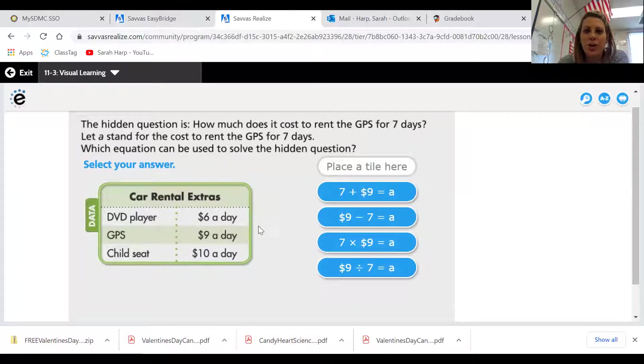They are wanting to know which equation shows how much it costs to rent the GPS for seven days. If we look at our chart, we know it's $9 a day. So if you're going to use it each day for seven days, how much money would you spend? Would you add, subtract, multiply, or divide to figure that out? Take a minute and think about that.